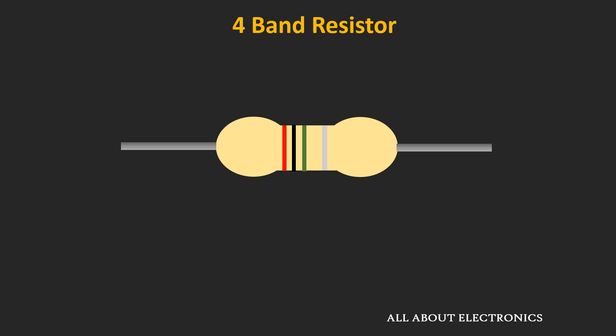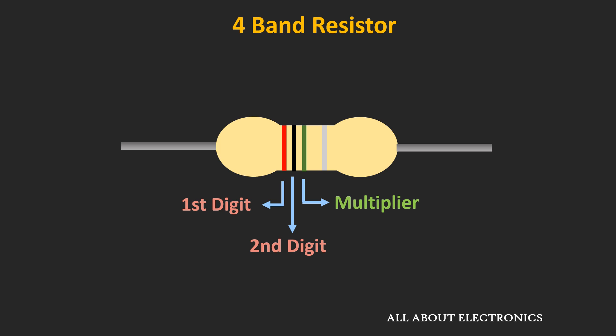Let us first find out how to determine the value of a 4-band resistor. In a 4-band resistor, the first two bands define the first two digits of the resistor's value. The third band defines the multiplying factor, and the fourth band defines the tolerance value. Depending upon the color of each band, the value of the resistor will change.